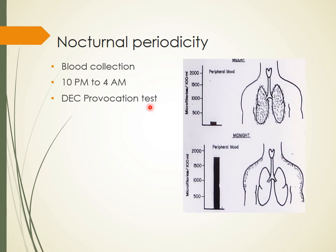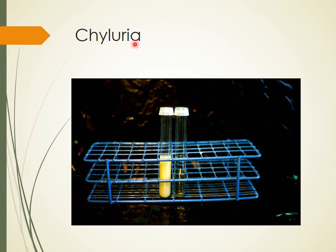If it is not feasible to collect blood at nighttime, the DEC provocation test can be done. You give 2 mg per kg body weight — usually 100 mg of DEC — and due to the effect of DEC, all microfilaria come out into the peripheral blood even during daytime. Blood is collected about half an hour after giving DEC. Chylous urine is also diagnostically important: the urine is creamy milky-white and opaque due to rupture of lymphatic vessels.